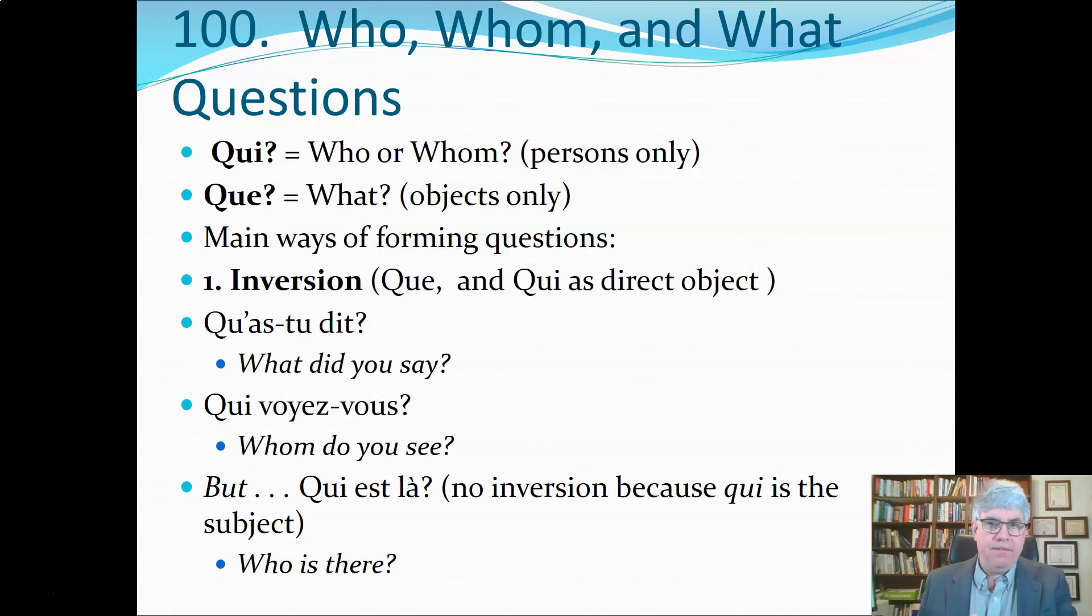That means the que or the qui are going to be the direct object because you've already got a subject. In the sentence qu'as-tu dit, we've got tu as a subject and dit as the verb. So what did you say? The que is what and then the tu. What did you say? We can do the inversion in English: what have you said? That comes out to be a word-for-word translation.